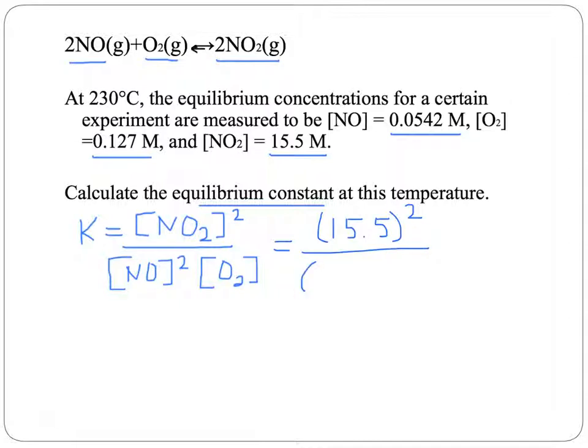And then in the denominator, our concentration of the nitrogen monoxide is 0.0542 molarity, also squared, times the molarity of the oxygen gas, which is 0.127.